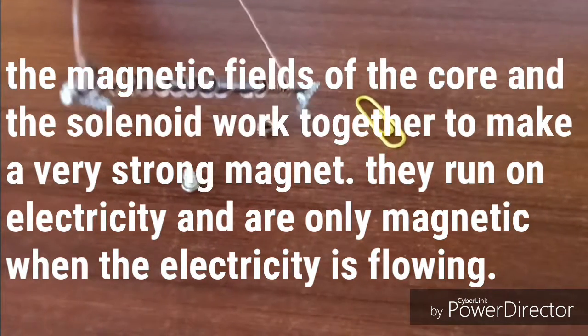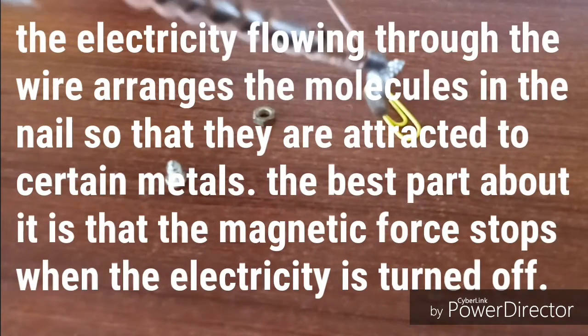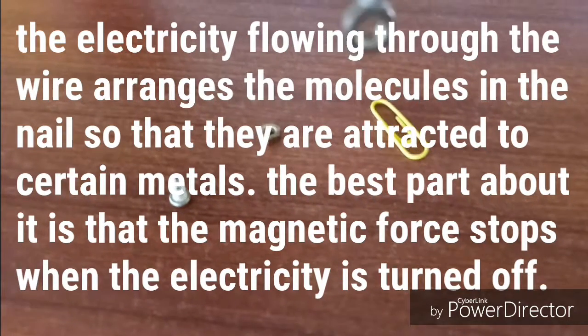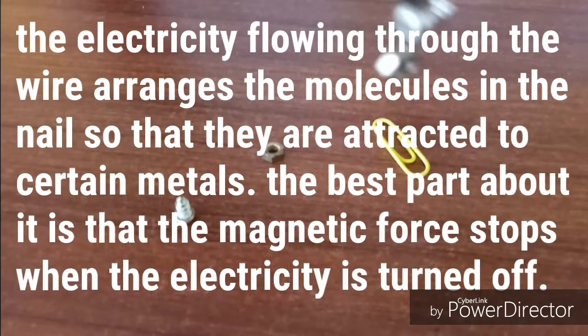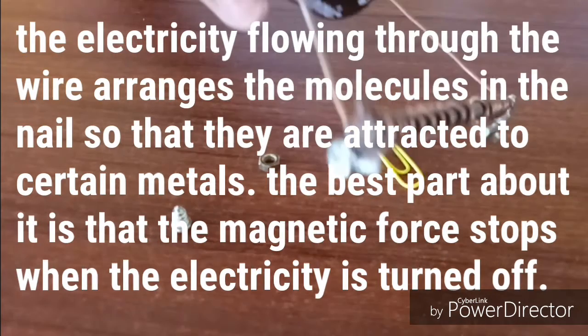They run on electricity and are only magnetic when the electricity is flowing. Electricity flowing through the wire arranges the molecules in the nail so that they are attracted to certain metals. The best part about it is that the magnetic force stops when the electricity is turned off.